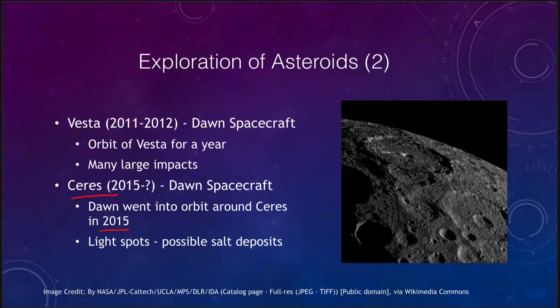Dawn went into orbit around Ceres in 2015 and studied the object, looking at craters and different structures. One of the interesting things found as it was approaching were some lighter-colored areas. It looks to be that they are possible deposits of salts — maybe from an impact or churned up by an impact, or things that formed long ago. They very much stand out from the rest of the surface of this dwarf planet.